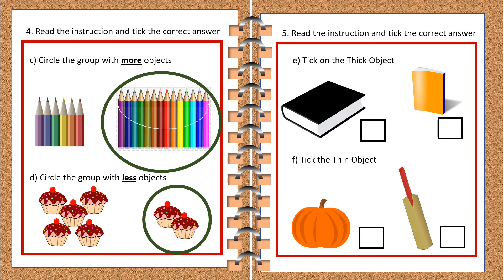The next activity: tick on the thick object. Can you quickly tell me which one is the thick object? The black book is thick because it has more pages in it. The next activity tells us to tick the thin object. Which one do you think is thin — a pumpkin or a bat? It's a bat.